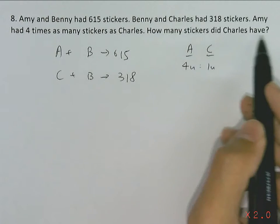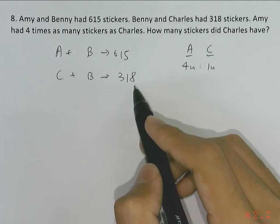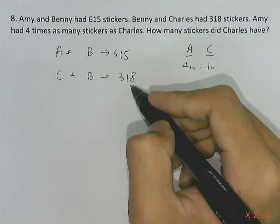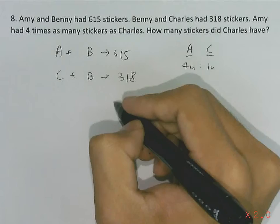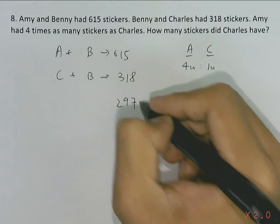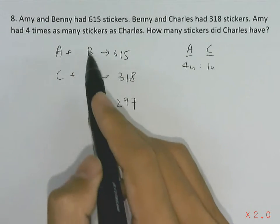The question is asking how many stickers did Charles have. First, we can take the upper equation and subtract the lower one: 615 subtracting 318 will be left with 297.